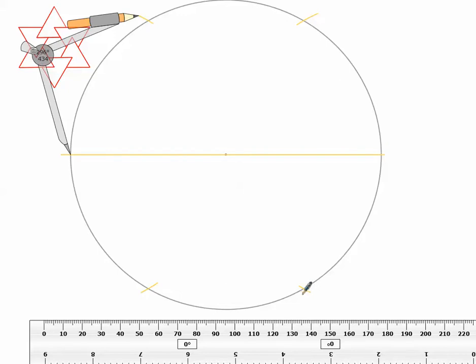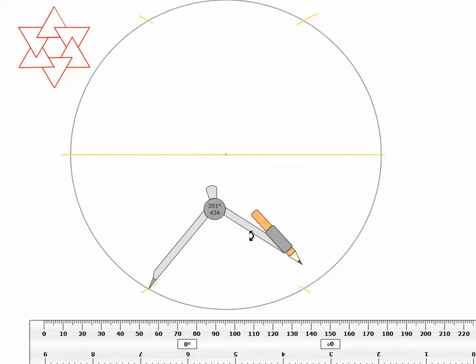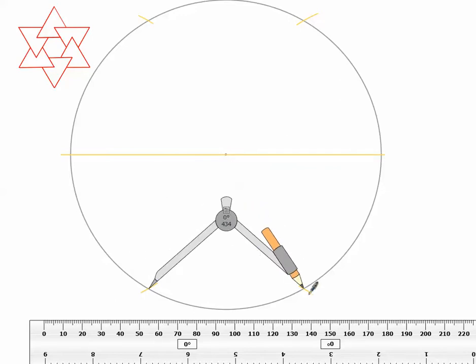Now, we already know that the distance from this arc to this intersection is the same as from this intersection to this arc, because we just drew it. What we don't know, however, is we haven't verified that the intersection of this arc and the circle to this arc, to this intersection, is the same. And we've just proved that with the compass.